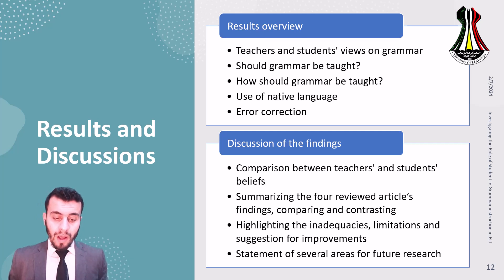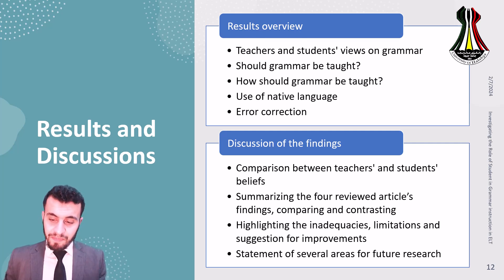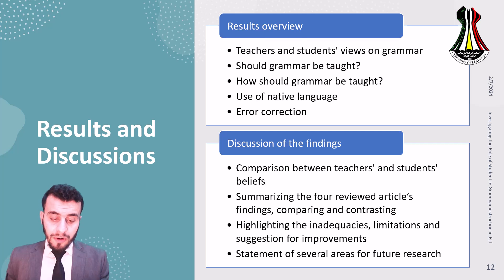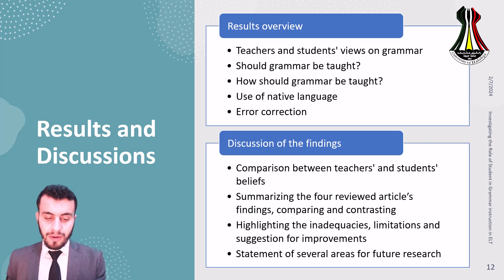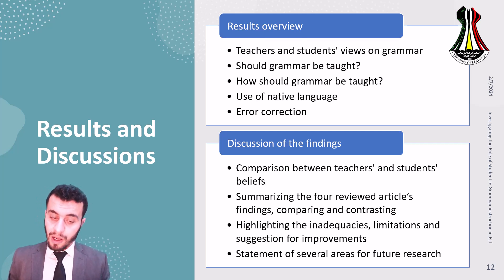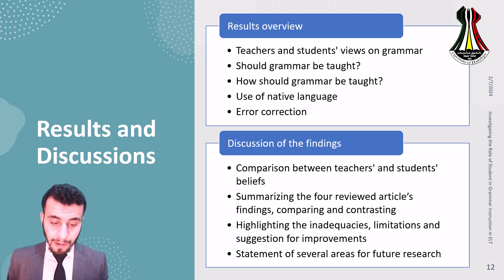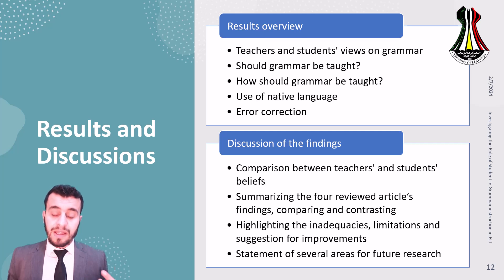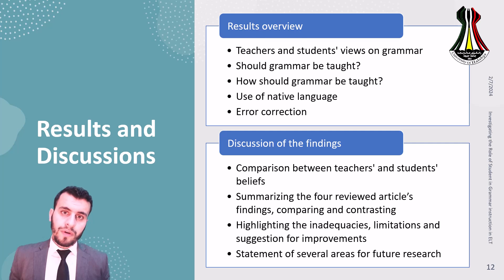For results and discussion — the most important parts — I prefer you read the full results and discussion in the review article yourself. In overview, there are five major results: teachers' and students' views on grammar; whether grammar should be taught; how grammar should be taught; use of native language based on perceptions of teachers and students; and error correction — whether errors should be tolerated or corrected immediately.